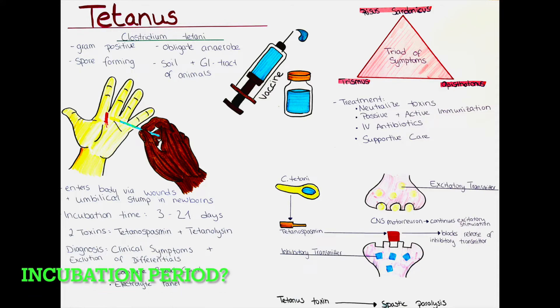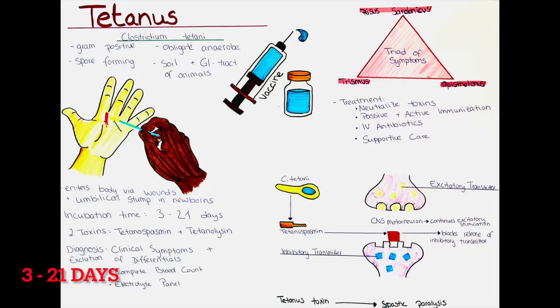What is the incubation period? The incubation period for tetanus typically ranges from 3 to 21 days but can vary from a few days to several weeks. Once developed, the disease is not transmitted to other people.